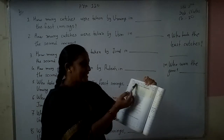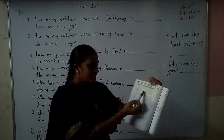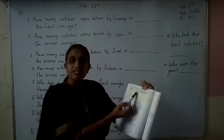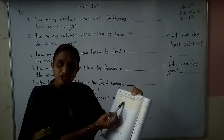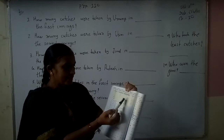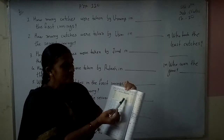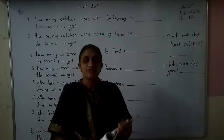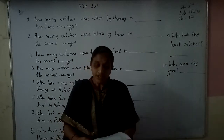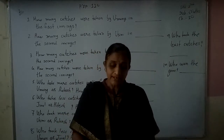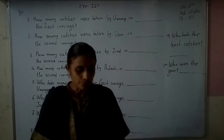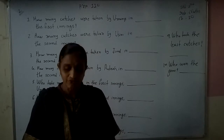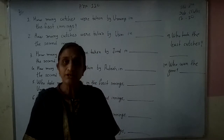The table has columns: friends' name, first inning, second inning, and total. First friend: Umang — first inning 14, second inning 8, total 22. Second friend: Kurni — first inning 16, second inning 4, total 20.